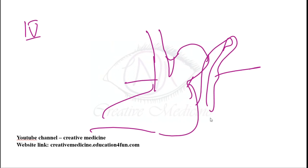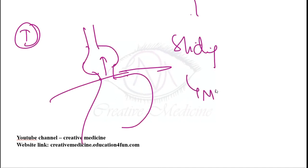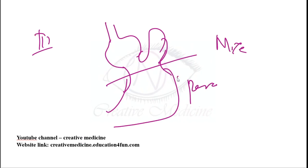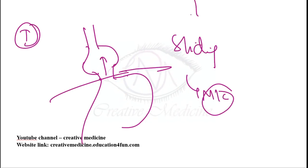The most common overall type of hiatus hernia is sliding hernia (Type 1). The most common type of paraesophageal hernia is mixed type (Type 3), where both sliding and rolling hernia are seen.